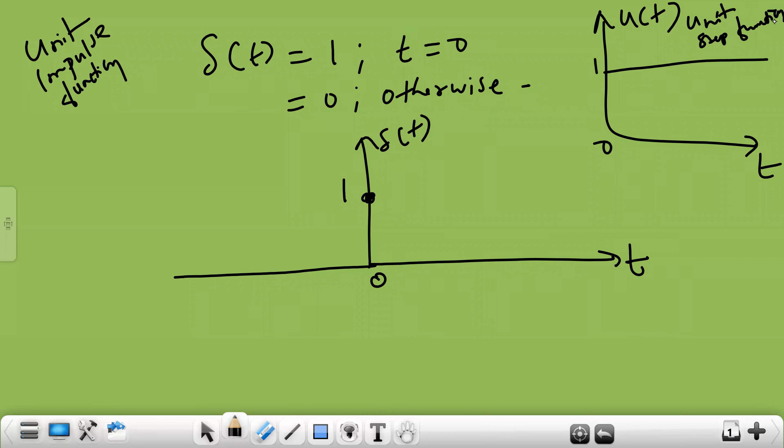So these are all the elementary functions. First function is step function, second function is known as impulse function, third one is unit ramp function. Plot the third one, unit ramp function.